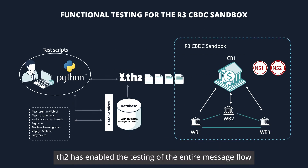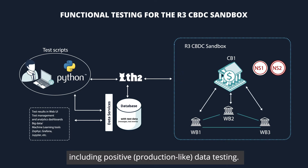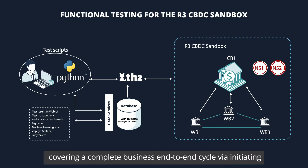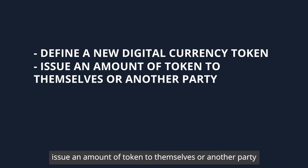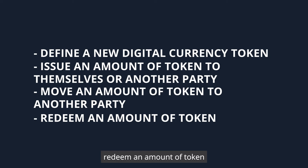TH2 has enabled the testing of the entire message flow between the central bank and wholesale banks, including positive or production-like data testing. TH2 also made it possible to automate and execute test scenarios covering a complete business end-to-end cycle by initiating necessary flows, such as defining a new digital currency token, issuing an amount of token to themselves or another party, moving an amount of token to another party, and redeeming an amount of token.